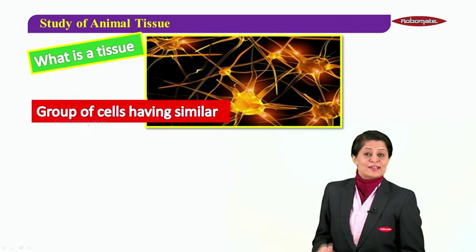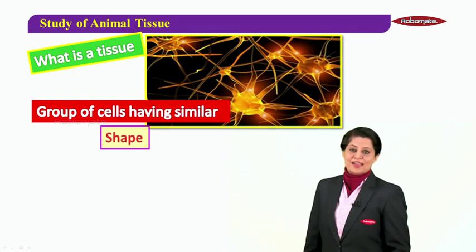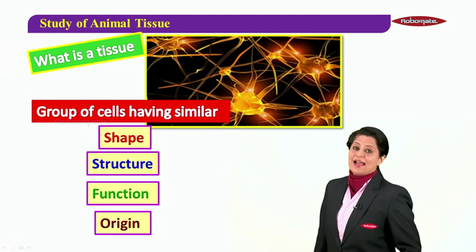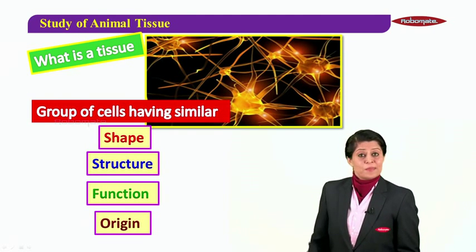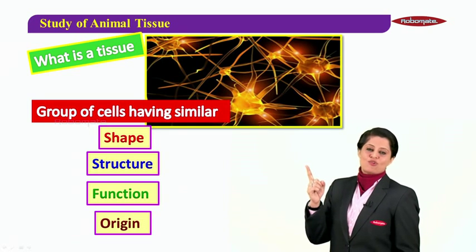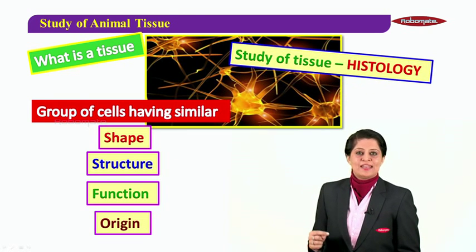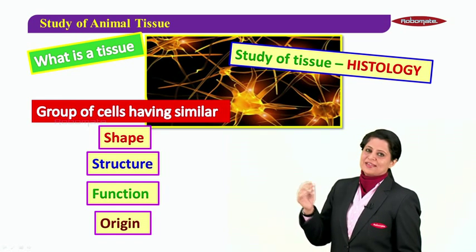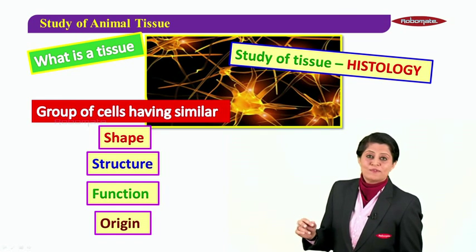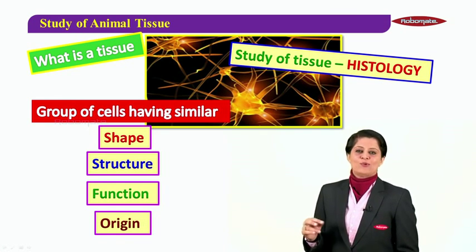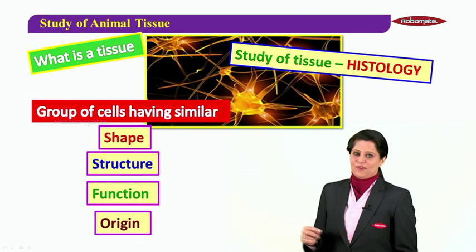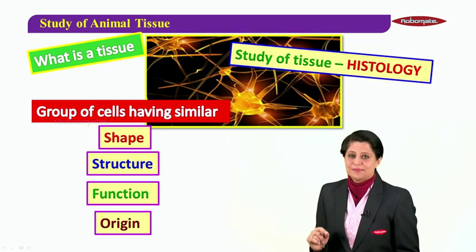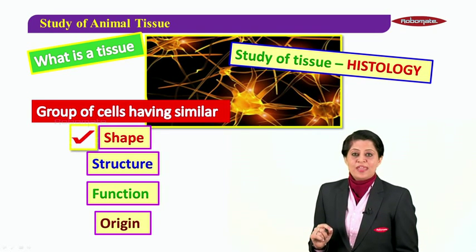So, a tissue is a group of cells having similar shape, similar structure, function, and origin, together with the intercellular substance. When we study the tissue of any organ, we call that histology of the organ.